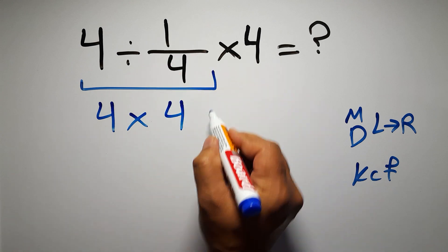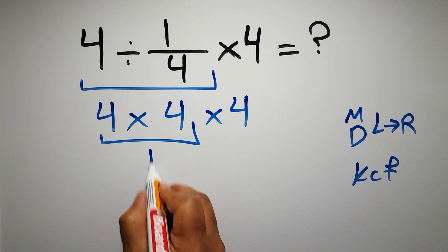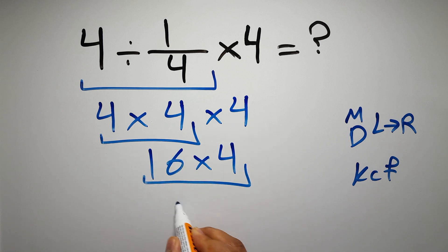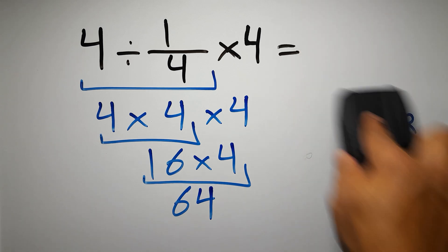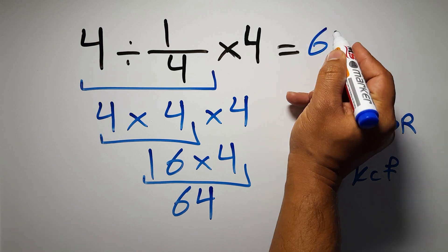And again here we have times four. Four times four gives us 16, and 16 times 4 equals 64. This is our final answer to this problem. The correct answer is 64.